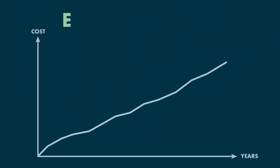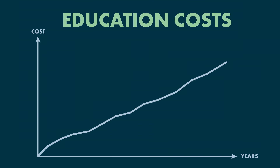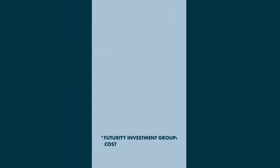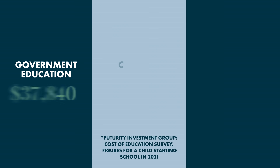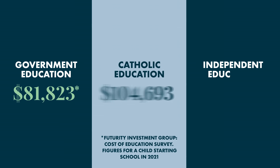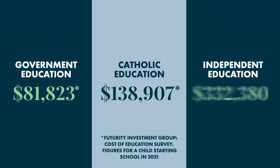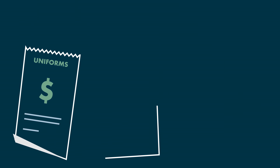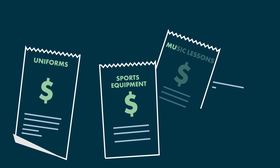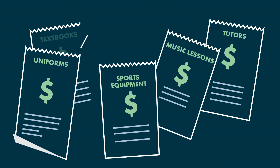The total cost of education can add up. In fact, the national average total cost of education can vary significantly depending on the type of education you're planning for. The true cost of education is more than just tuition.